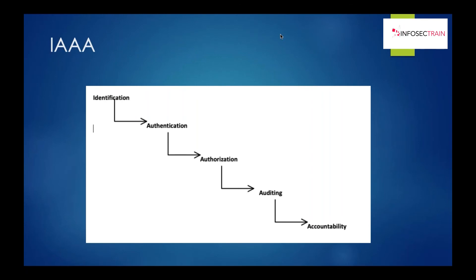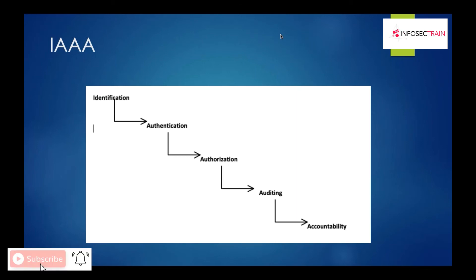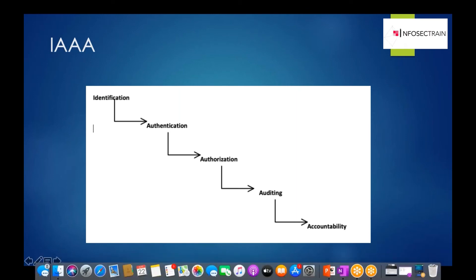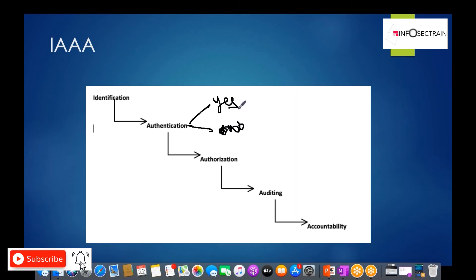A fundamental of information security is ensuring proper identification, authentication, and authorization. Identification is the process by which a subject provides some kind of identity — it is a claim, such as 'I am Prashant.' Authentication is verifying that claim by providing additional proof. The outcome of authentication is binary — either yes or no — you are either authenticated to the system or you are not.